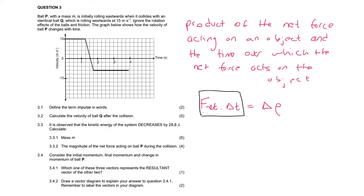Impulse is the product — because they're multiplying and that's what product means — of the net force acting on an object and the time over which the net force acts on the object. That's all we're actually saying there. That's the definition for 3.1.